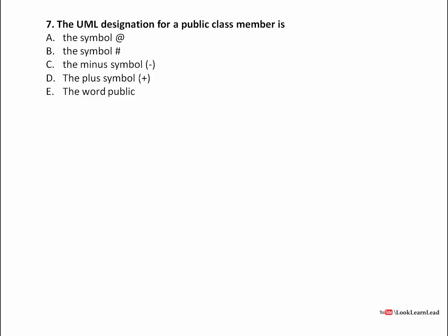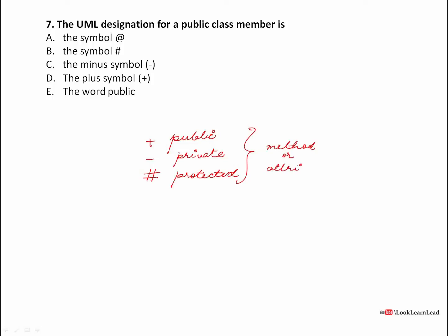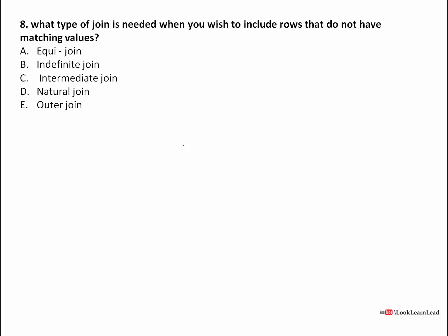Now a question from DBMS: the UML designation for a public class member is a plus sign. In UML, the plus sign is used for public, the minus sign is used for private, and the hash is used for protected members of a class. These can be methods or attributes. So the answer for public is plus.